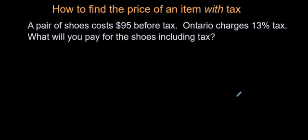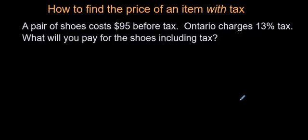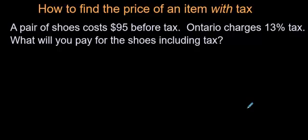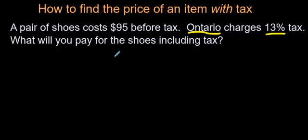Hello there. This is going to be a quick video on how to find the price of an item with tax. In Ontario, which is where I live, it's 13% just about for everything. It's pretty expensive. So what we're going to do here is just quickly figure out how do you find the tax on an item. And let's get right to the question here.